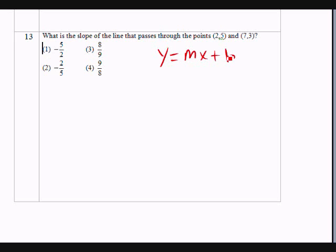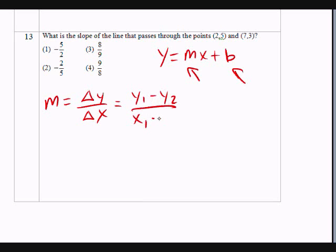What we need to find here is the slope, which is m, and we need to find b, which is the y-intercept. First, let's find the slope. Well, slope is m. That's equal to change in y over change in x. And that could be represented by y1 minus y2, x1 minus x2.